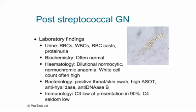Bacteriologically, we can find evidence of infection from a positive throat or skin swab. Some patients have a high ASOT (antistreptolysin O titre), and if the ASOT is equivocal or negative, you can look further using anti-hyaluronidase or anti-DNase B. Immunologically, these children almost inevitably have a low C3 at presentation and a normal C4, with C3 returning to normal after about 6 weeks.